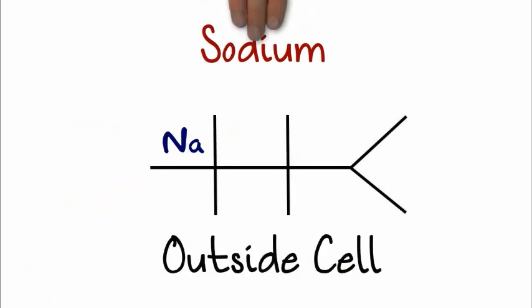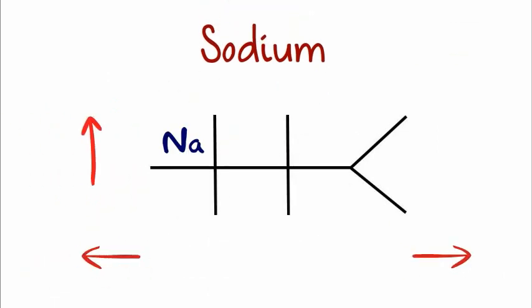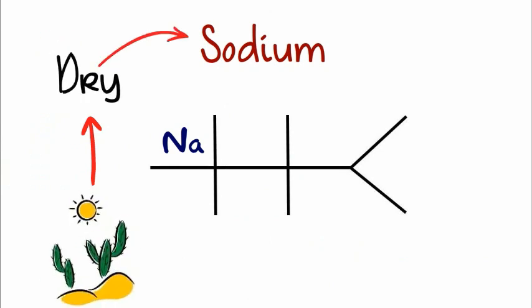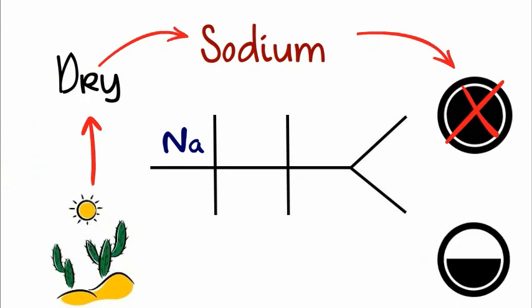In our first column, we have sodium, and that's outside the cell, and sodium loves water, and high is dry, or dehydration. Since they don't have the fluid on board, the sodium is concentrated, and high is dry.